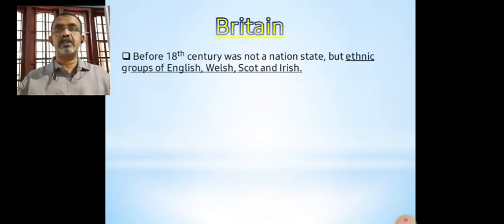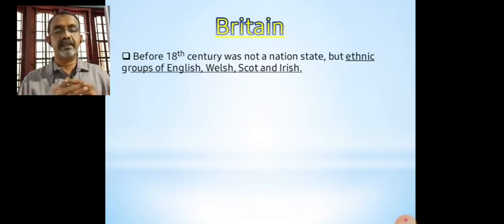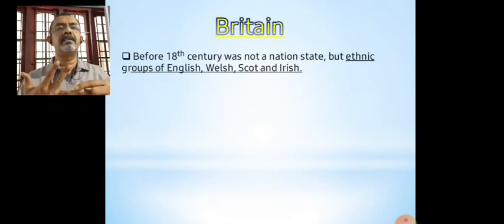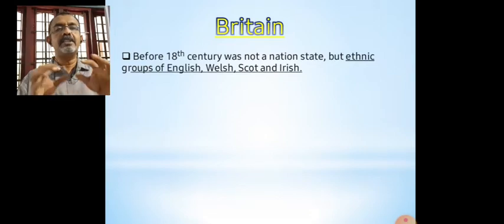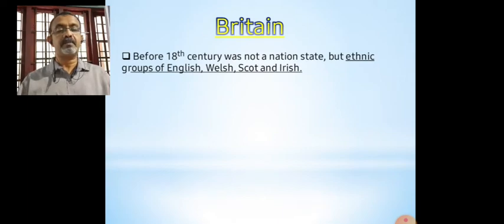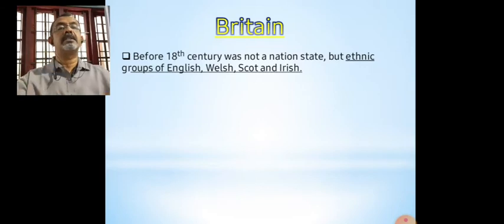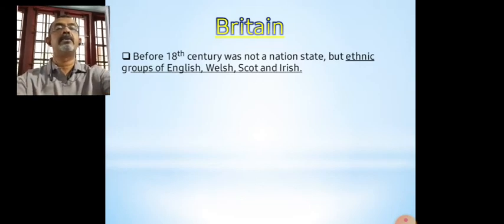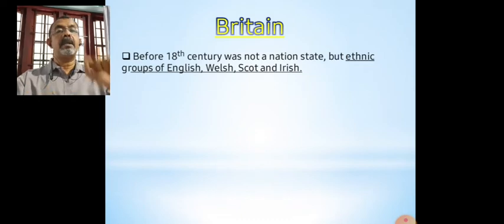Before the 18th century, it was ethnic groups of English, Welsh, Scots, and Irish. Are you familiar with these countries? Now it is England, Wales, Scotland, and Ireland. All these together form Great Britain now. Before the 18th century, it was just ethnic groups, but among them, England was more powerful and wealthy.